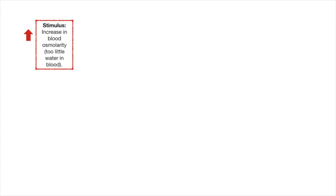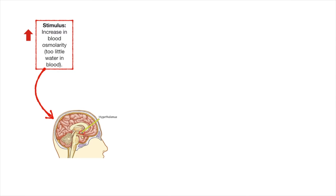It all starts with a stimulus, and in this case, the stimulus would be an increase in blood osmolarity. In other words, our blood becomes too full of solutes — there is just not enough water to dilute the solutes that are in our blood. This is actually detected by a gland that you're familiar with: the hypothalamus.